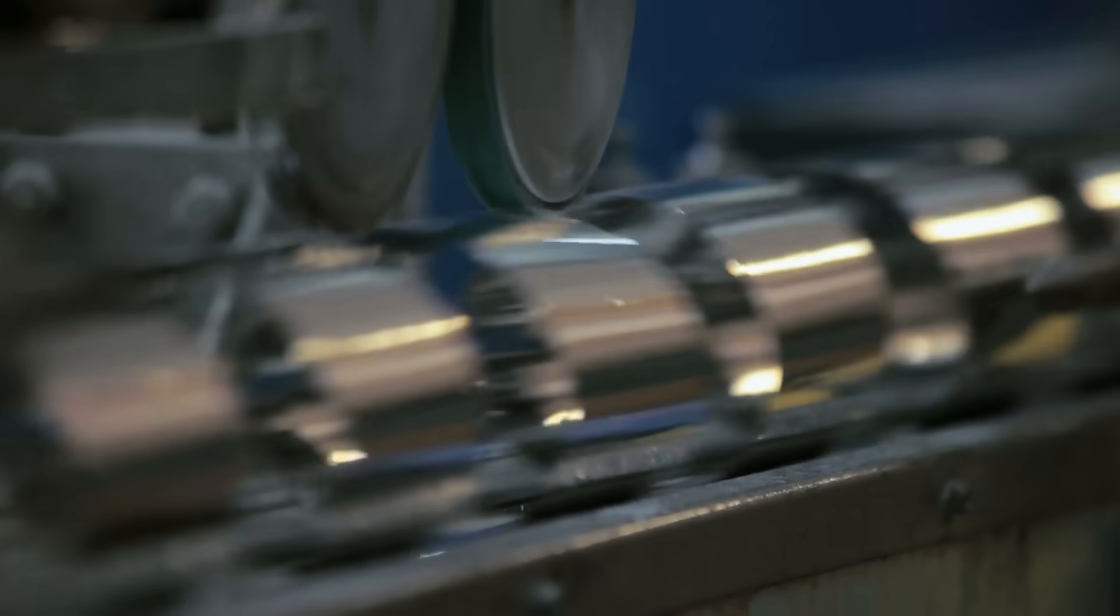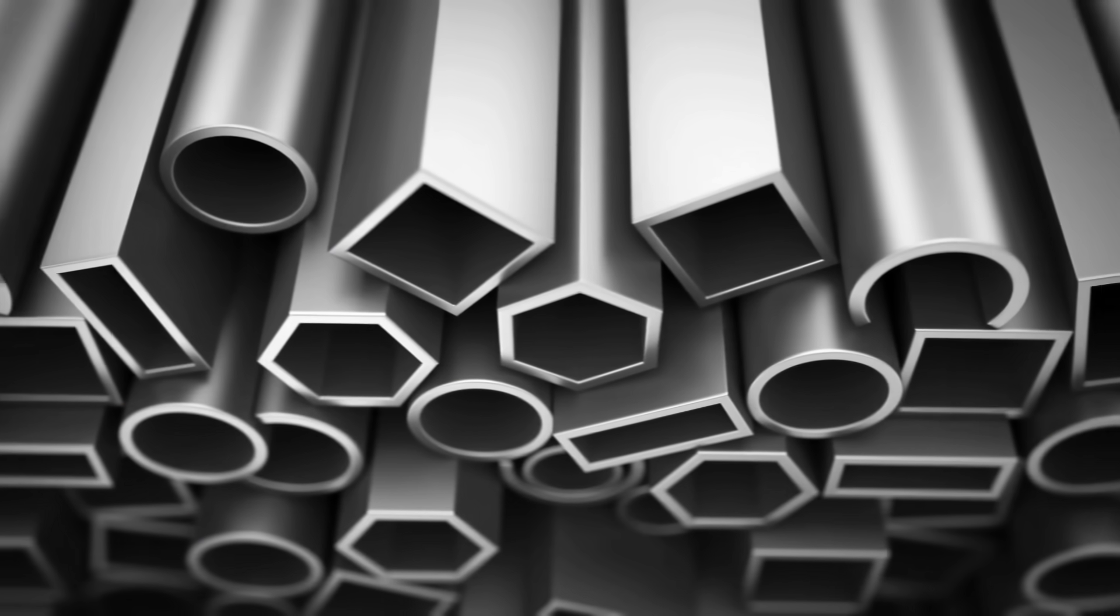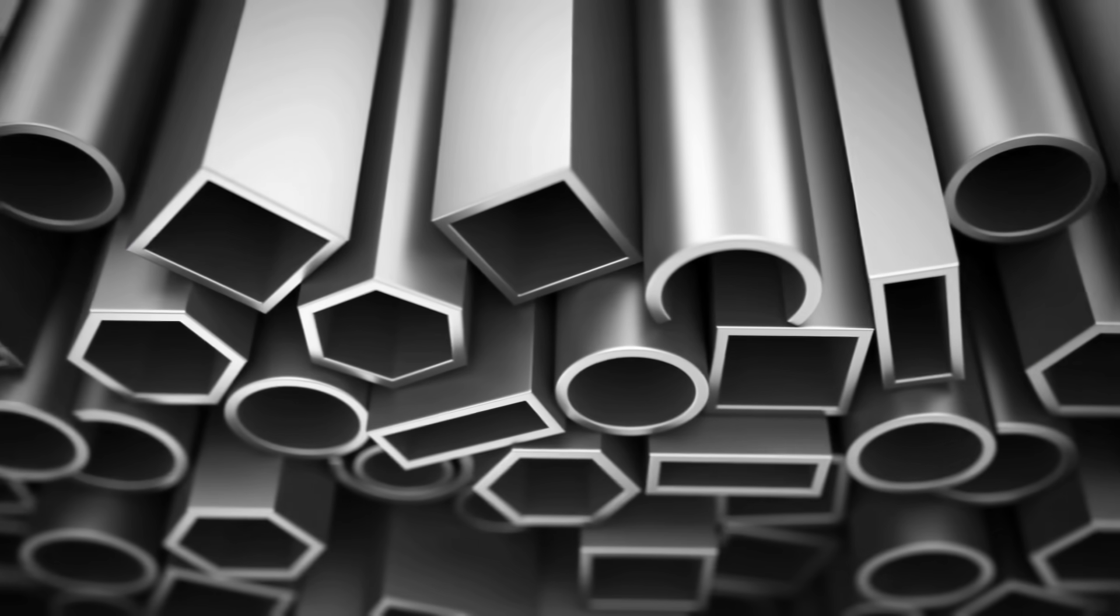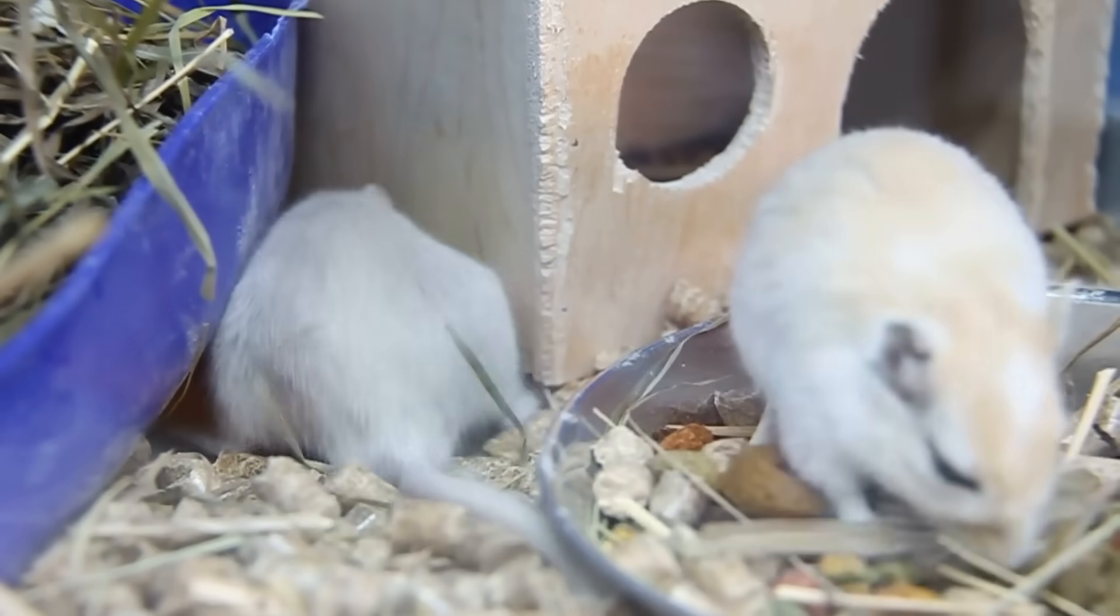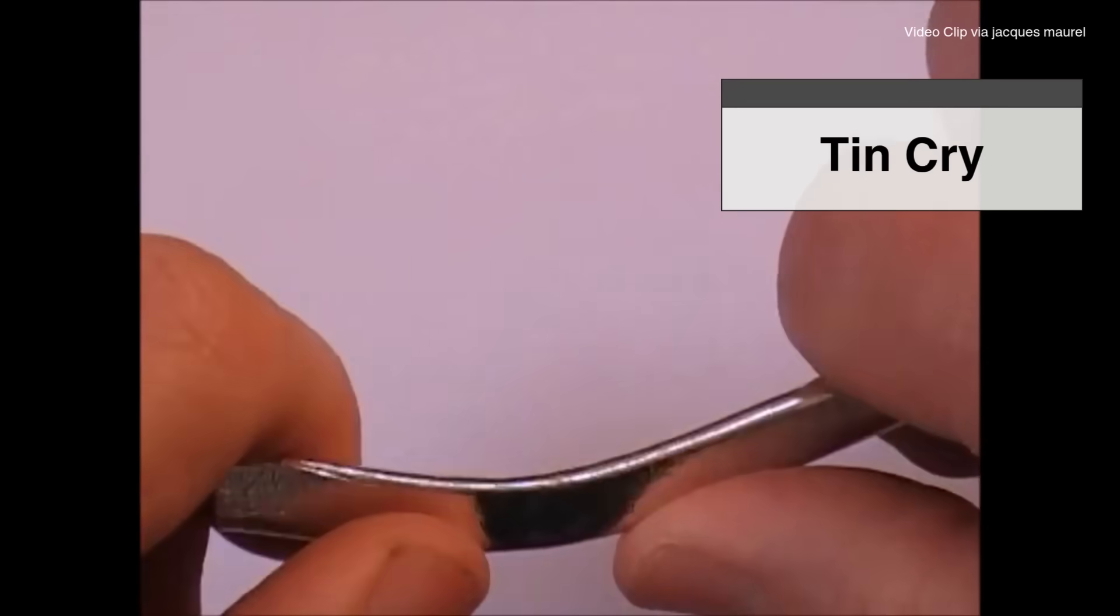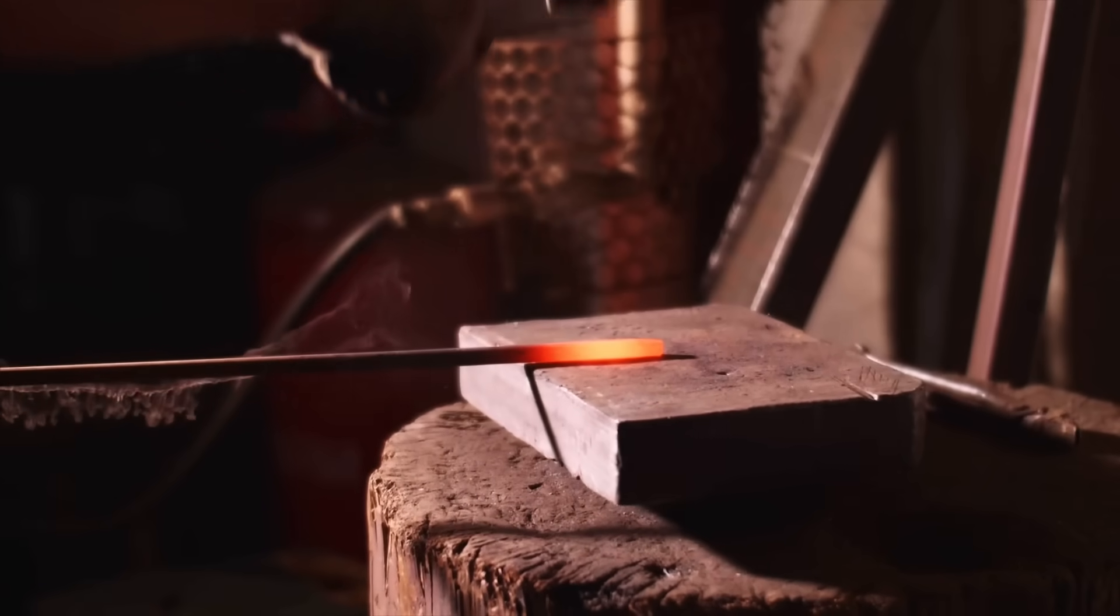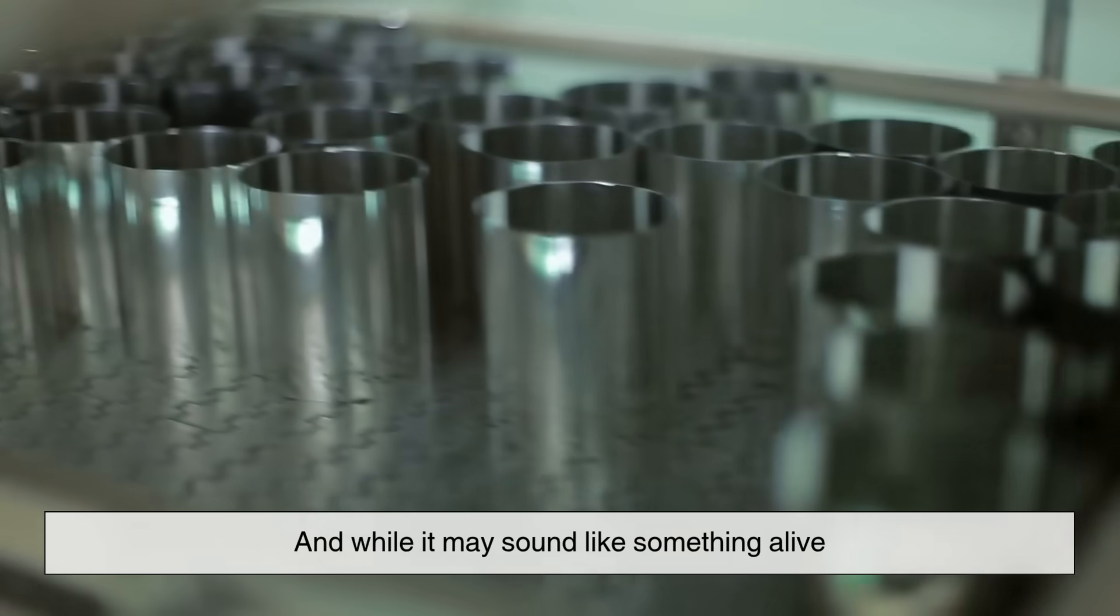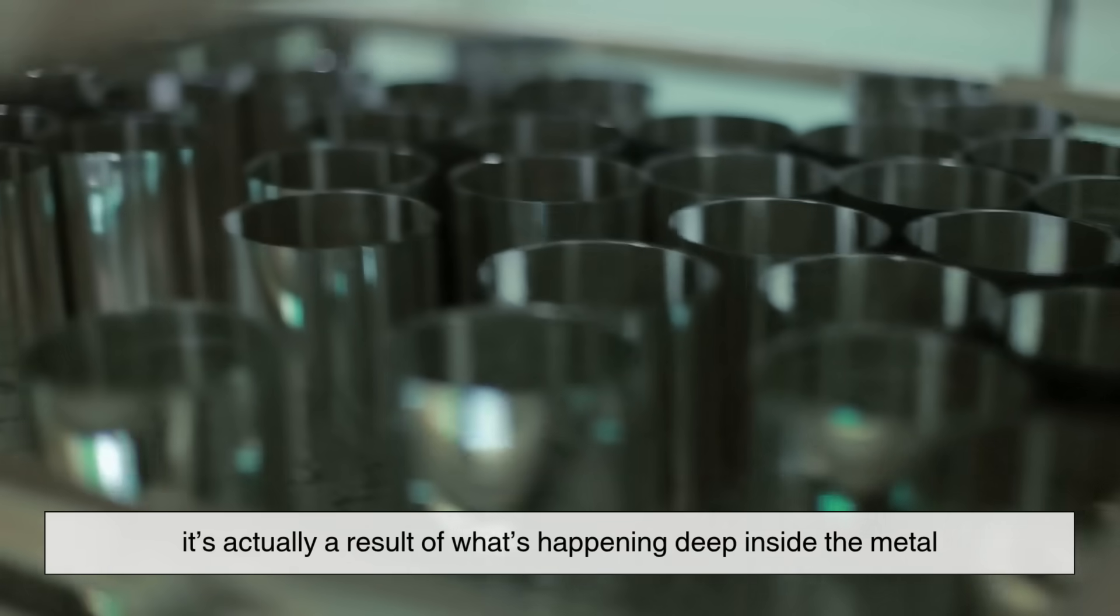Let's start with what it actually sounds like. If you take a bar or rod of pure tin and slowly bend it, you'll hear a distinct, almost squeaky sound - like someone softly scratching a window or a mouse chirping in the distance. That sound is known as the tin cry. And while it may sound like something alive, it's actually a result of what's happening deep inside the metal.